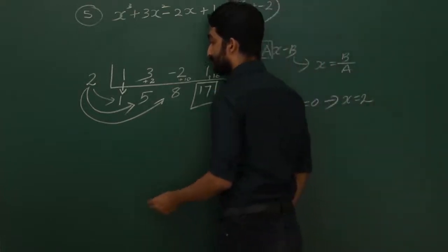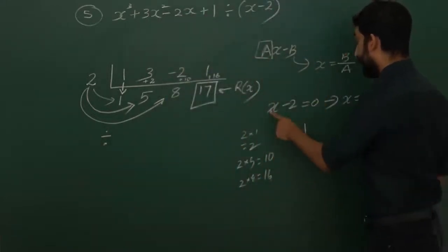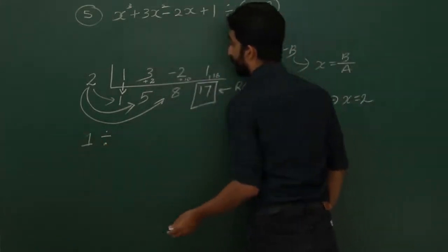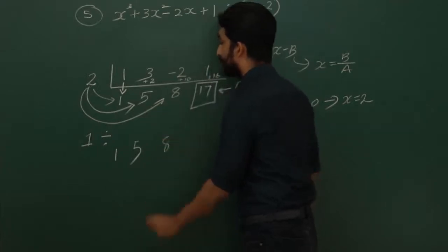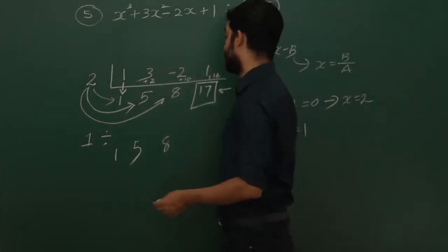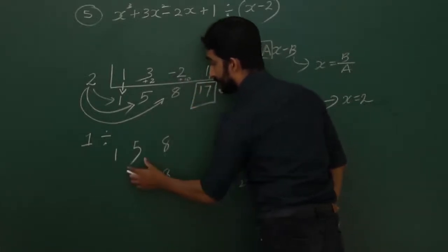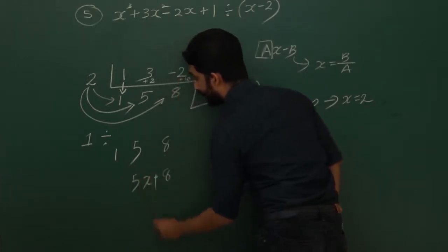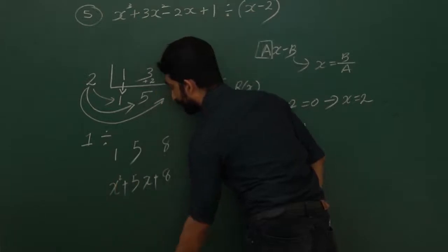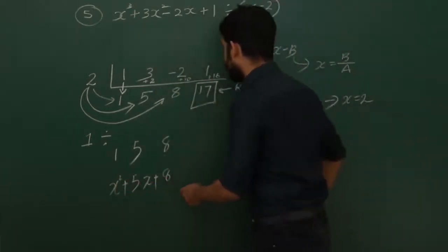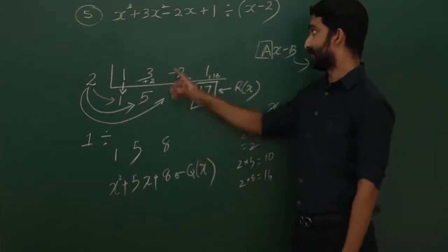To find the quotient, divide all other digits by a. Here a equals 1, so dividing 1, 5, and 8 by 1 gives 1, 5, and 8. The degree goes in ascending order from right to left: the rightmost digit is the constant, next is the x term, then x². So the quotient is x² + 5x + 8.